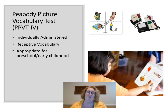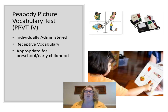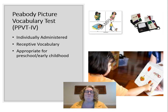The PPVT uses a basal-ceiling approach: starting at the age-appropriate item, if the student misses any of the first five items, you go back until the student gets five correct in a row — that establishes the basal, and you assume all earlier items would be correct. Then you continue forward until the student misses five wrong in a row — the ceiling — and you assume they wouldn't get any more right. This targeted approach maximizes testing time, especially with young children who may not sit still for long.